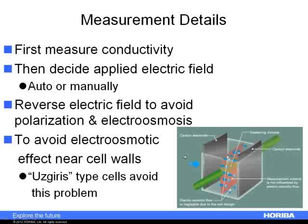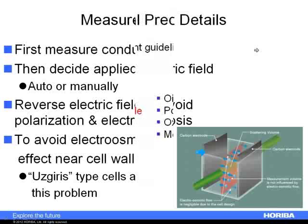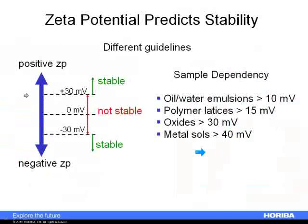Colloidal gold is a very tough particle — we could apply any electric field we want and it won't hurt the gold. But if we're coating the surface with DNA or proteins, we need to be very careful. These cells are designed to be very gentle to samples so that we can get good accurate data and not ruin the sample during the course of measurement — a detail I will give towards the end of the presentation.